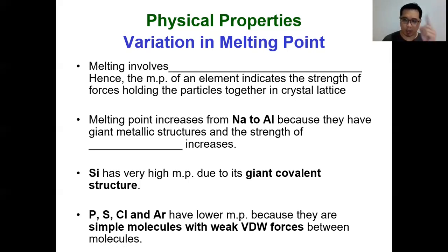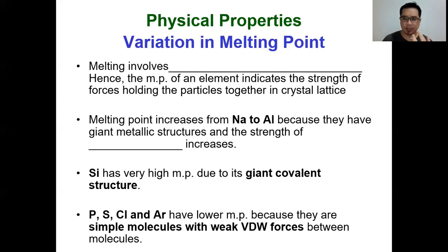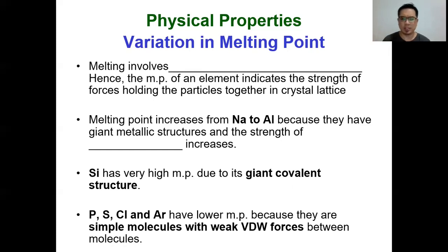Each sodium atom can donate one electron to the sea of the localized electron cloud. Each magnesium can donate two electrons, and each aluminium can donate three electrons to the sea of the localized electron cloud. The more electrons that can be contributed per atom, the stronger the metallic bonding. That's why the melting point increases from sodium to aluminium - the strength of metallic bonding actually increases due to the increasing number of electrons contributed to the sea of the localized electron cloud per atom.